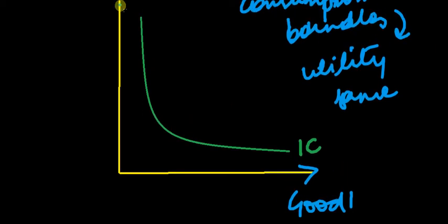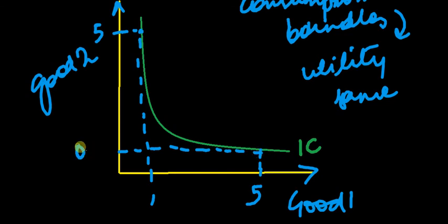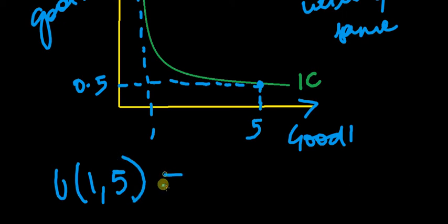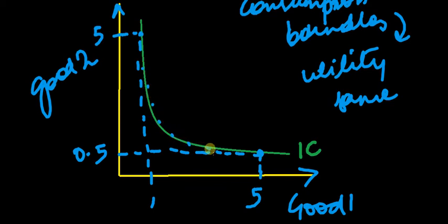For example, if I take good one on one axis and good two on the other, and I take one unit of good one and five units of good two — that's one point on the indifference curve — and then five units of good one and half a unit of good two, that's another point. The utility from (1, 5) should equal the utility from (5, 0.5).